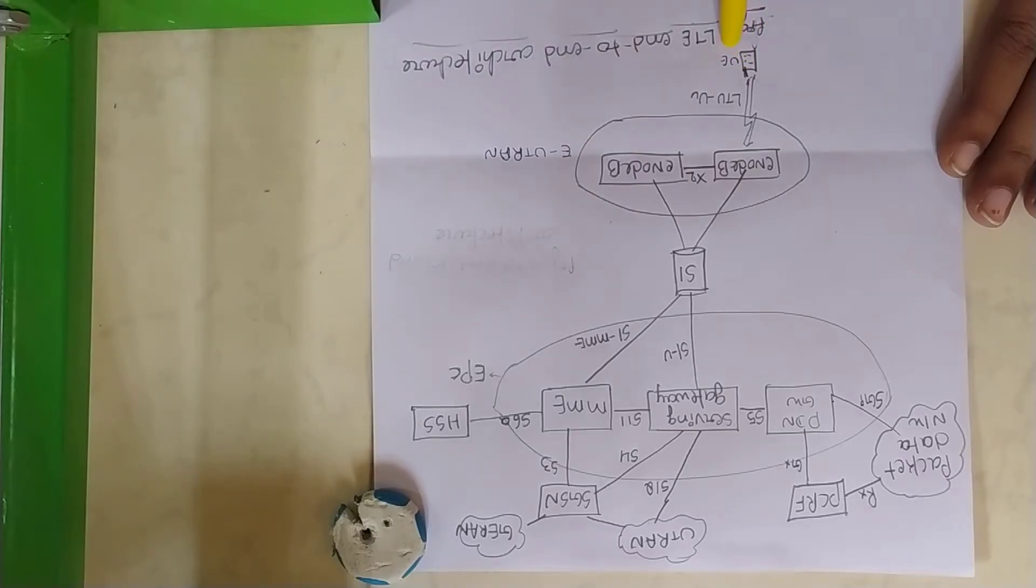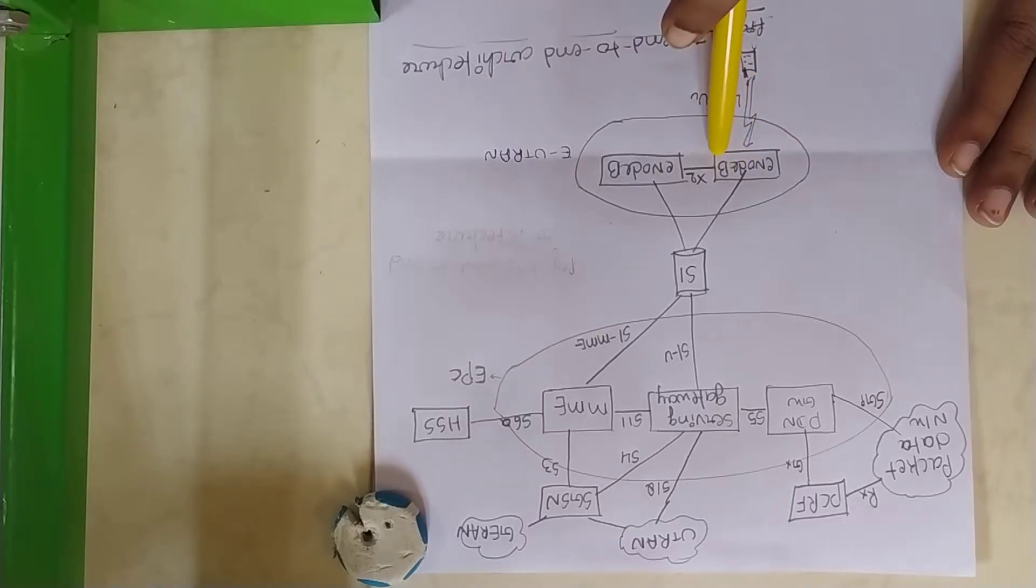UE is user equipment. This UE makes air interface with the E node B. The UE's first connection is with the E node B. You can see here LTE-Uu interface between UE and E node B.